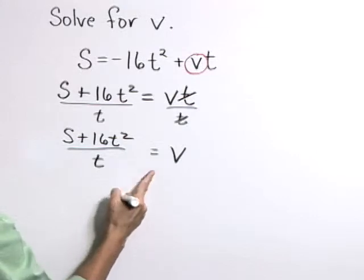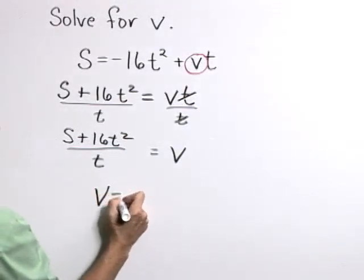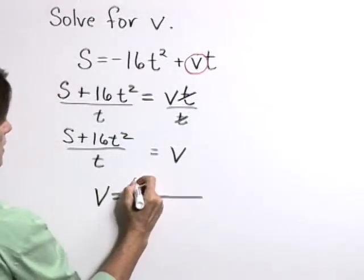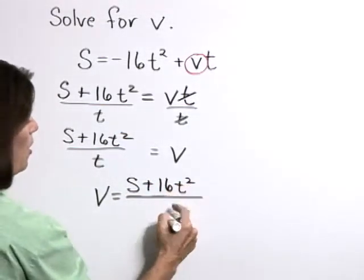And I like to write this with the v on the left side just because it's easier to read. V is equal to s plus 16 t squared all over t.